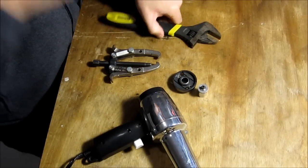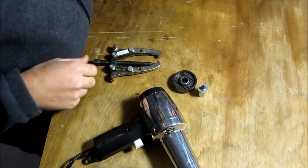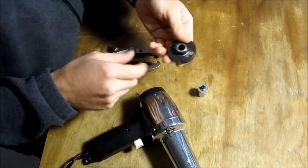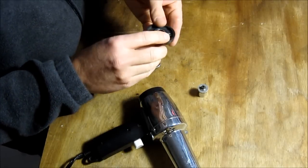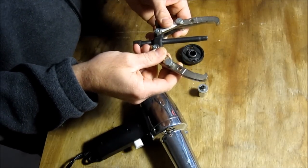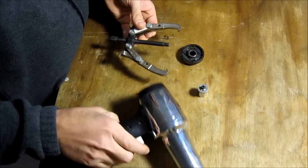I'm going to demonstrate a way to remove a one-way bearing out of a T-Rex 700 clutch. First thing you're going to need is a set of bearing pullers, and you're going to need a heat gun.